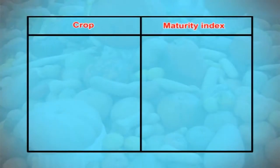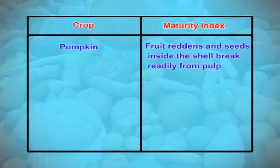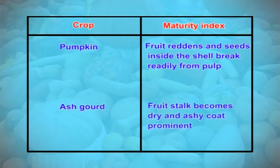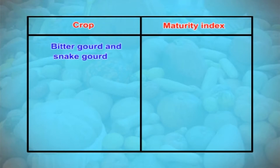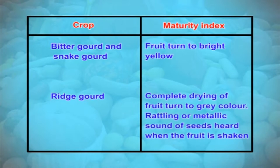Besides days to maturity, change in colour and other parameters are used as criteria for maturity index. In pumpkin, the maturity index is reddening of the fruit and the seeds inside the shell break readily from the pulp. In ash gourd, the fruit stalk becomes dry and an ashy coat pigmentation becomes prominent on the fruit surface. In bitter gourd and snake gourd, the fruit turns bright yellow in colour. In ridge gourd, the fruit gets completely dry or turns grey in colour, and when shaken, a rattling or metallic sound of the seed is heard.